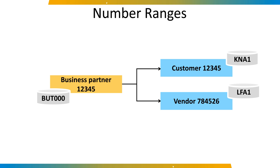In the third type of number assignment, the customer and vendor number are merged to one business partner number, where the business partner and customer use the same number. In the fourth type of number range assignment, the customer and vendor number are merged to one business partner number, but the business partner and customer or vendor use different numbers. I hope you enjoyed this video — please give it a thumbs up and consider subscribing for future updates.